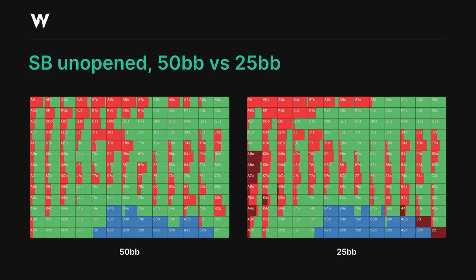We're still folding at roughly the same frequency and those small pairs and middling offsuit aces are favouring the all-in ahead of anything else. Our raising range has actually become more polarized because we're now forced to remove any hands which would be indifferent versus an all-in shove at 25 big blinds. Hands like the weaker suited aces, queen-ten suited, and king-nine suited are now limping because they're neither strong enough to comfortably raise-call nor weak enough to justifiably raise-fold. Our limping range is also a little more protected at this stack size.